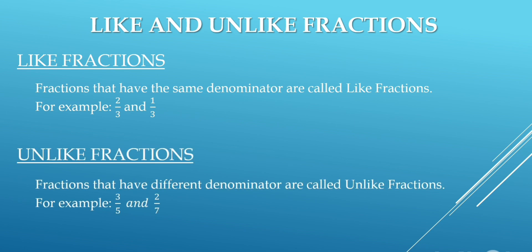Unlike fractions: fractions that have different denominators are called unlike fractions. For example, 3 upon 5 and 2 upon 7. In this example, both denominators are different, so these are unlike fractions.